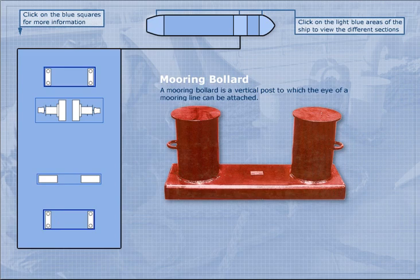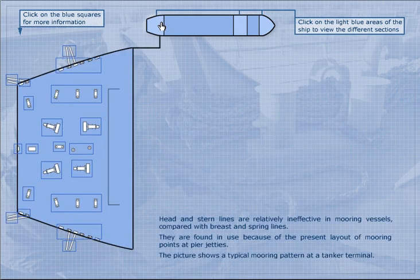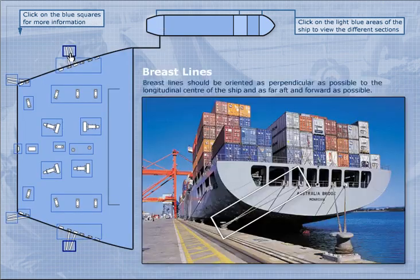A wire guide is used for a mooring line which lifts the line over obstructions on a deck. A mooring bollard, as mentioned, is a vertical post to which the eye of the mooring line can be attached. In the aft part of the ship you can find breast lines, which should be oriented as perpendicular as possible to the longitudinal centerline of a ship.